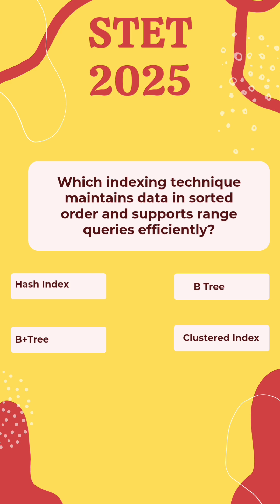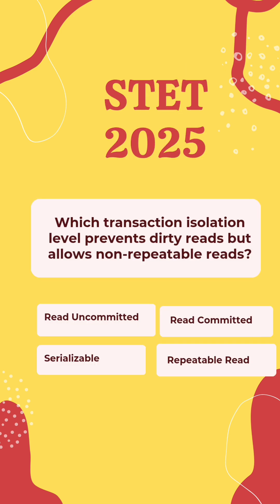Which indexing technique maintains data in sorted order and supports range queries efficiently? Options: Hash Index, B-tree, B+ Tree, Clustered Index. The correct answer is B+ Tree.